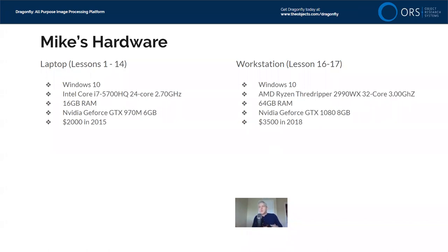I'm using the same workstation as yesterday's lesson. I have a graphics card that cost me about $600 a couple of years ago, and this whole system was about a $3,500 build. If you have a $10,000 or $20,000 build, you'll have much higher performance. But you can even use Dragonfly on more modest hardware — even my laptop can do the deep learning segmentation, it just goes a little bit slower.